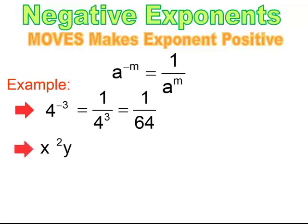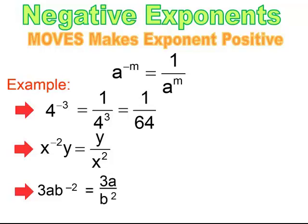So if I have x to the negative 2nd power times y, y doesn't have a negative power and therefore won't move. The only thing that moves is the thing with the negative power. So y stays up top, and x to the negative 2nd moves under, giving y over x to the positive 2. When you see something like 3ab to the negative 2nd, the 3 and a do not have negative powers — only b to the negative 2nd moves. So I end up getting 3a all over b squared.